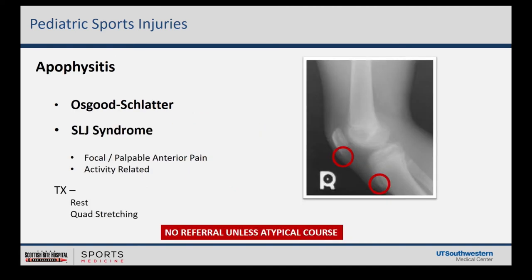Most of us are comfortable with apophysitis. The classic is Osgood-Schlatter's — typically kids ages 11 to 14. In slightly younger kids ages 9 to 11, it may present at the distal pole of the patella: distal patellar apophysitis is called Sinding-Larsen-Johansson syndrome, or SLJ. Osgood-Schlatter's is at the tibial tubercle. These are classically point-tender in very specific locations — about the size of a quarter. No effusion, no sudden event. Treatment is rest, quad stretching, increased flexibility, and it will improve over time.